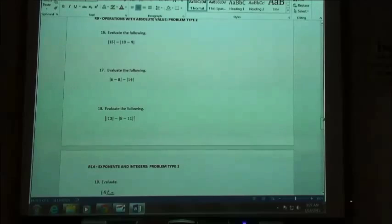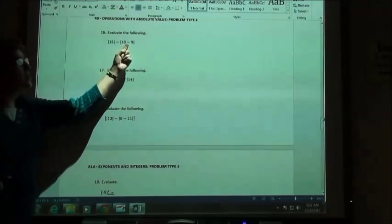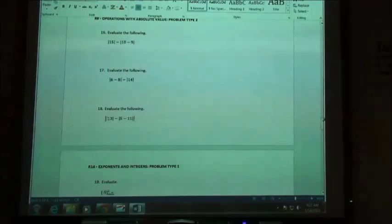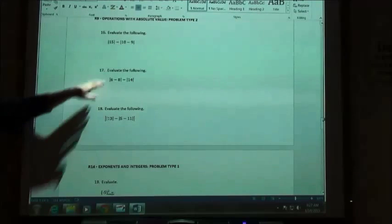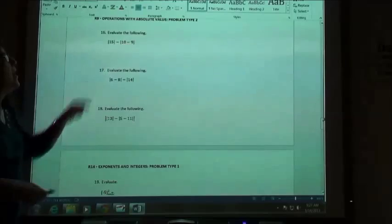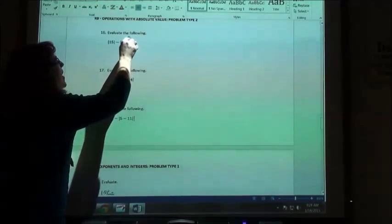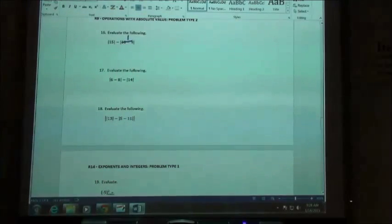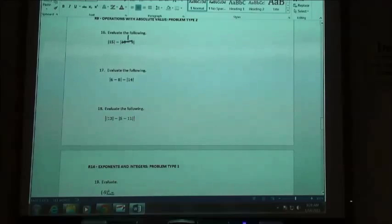But before you can apply the absolute value, you have to do the math inside the absolute value symbols. So if I'm going to evaluate this first expression, I'm going to do the 10 minus 9 first. 10 minus 9 is 1. Once I just have one number inside my absolute value, I can then apply the absolute value.